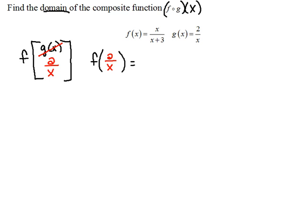Okay, the f function is a fraction. It says we're going to take the variable over the variable plus 3. But in place of those variables, we're evaluating for 2 over x. Now, this is the composite function, but it's not simplified, so we need to simplify this properly.